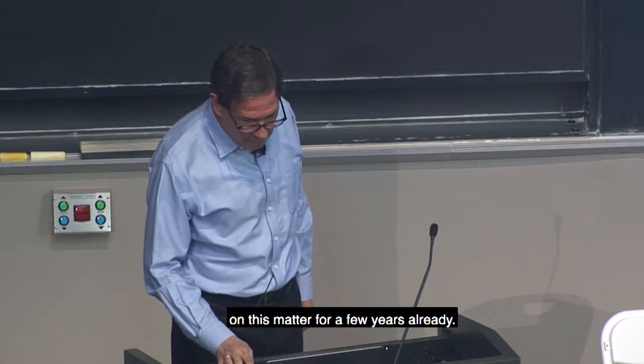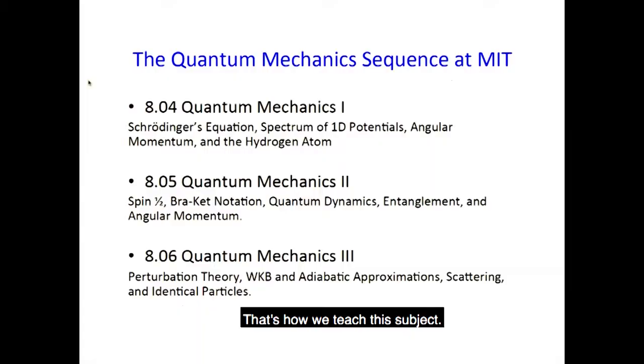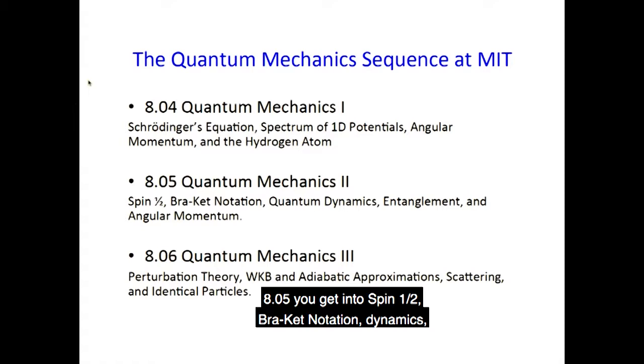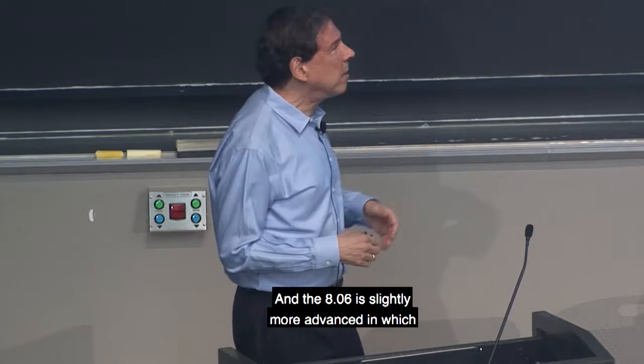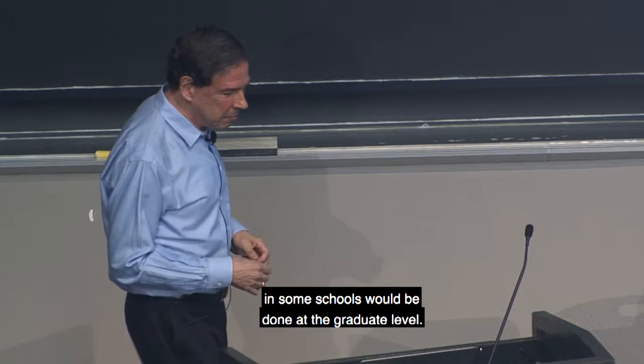So here is the quantum mechanics sequence at MIT. That's how we teach the subject. We're one of the few schools that has three courses at the undergraduate level. This is 804, the first course in quantum mechanics, where you learn some of the basics of the subject. 805, you get into spin 1.5, bracket notation, dynamics, entanglement, and angular momentum. And 806 is slightly more advanced in which you have approximation methods and subjects that, in some schools, would be done at the graduate level.